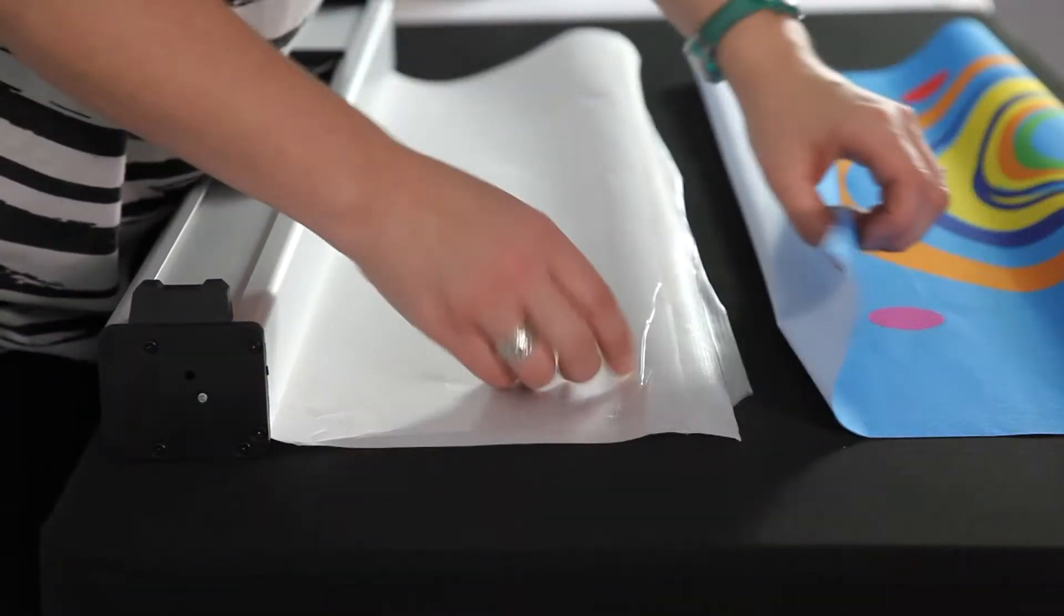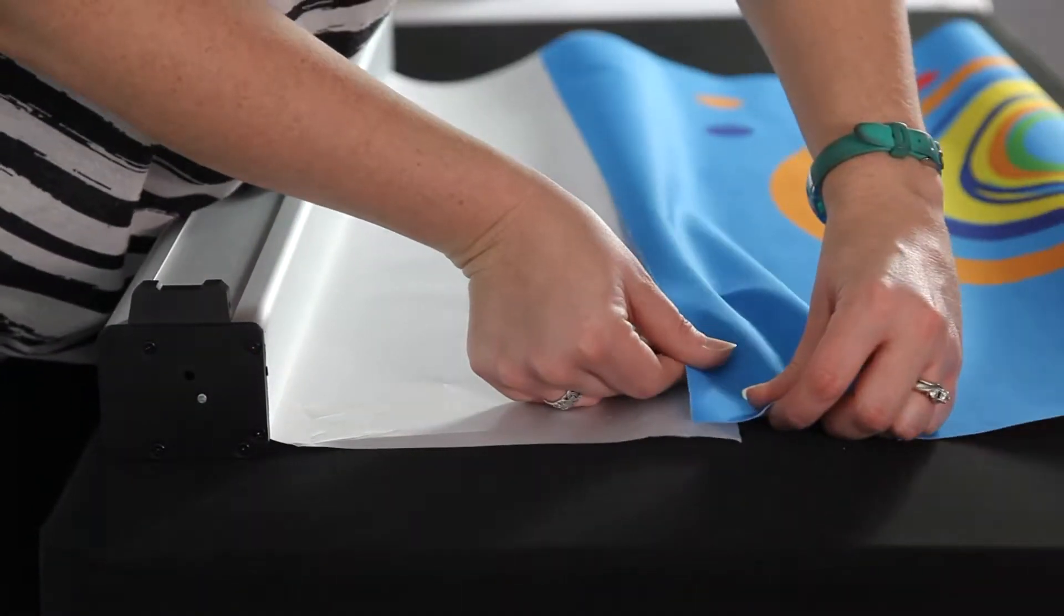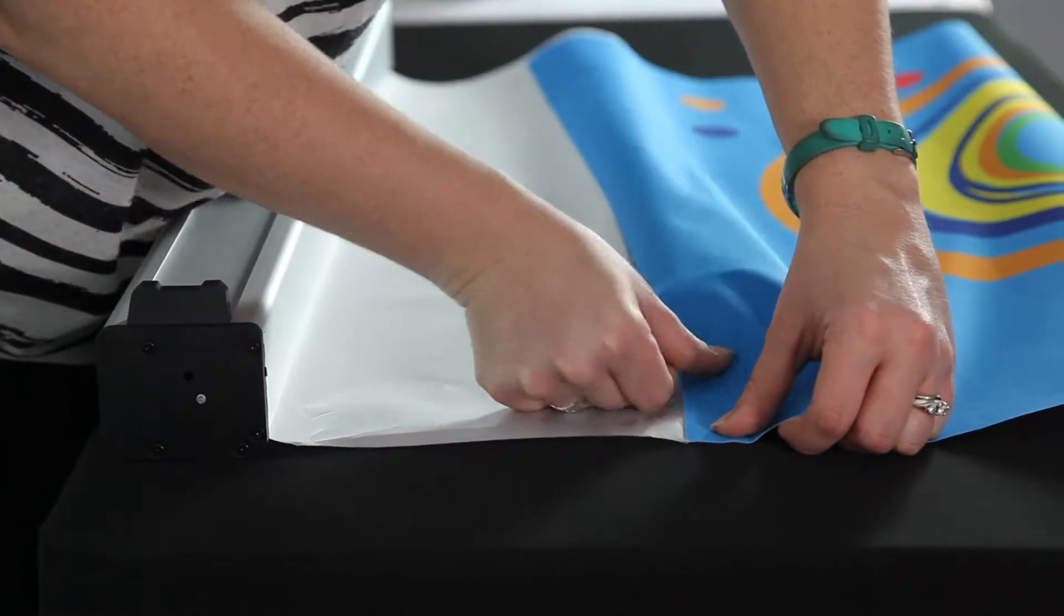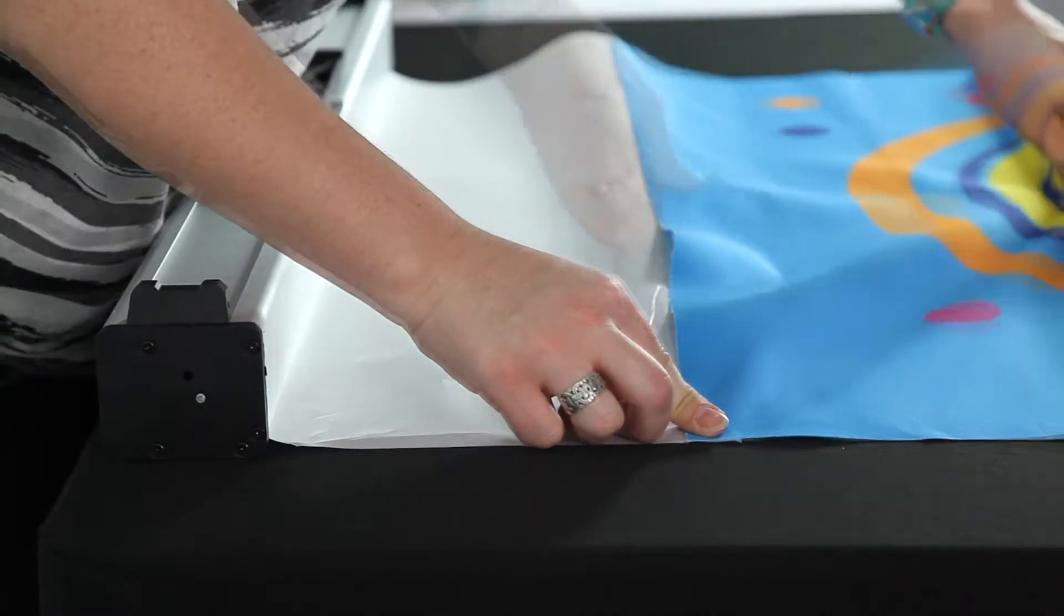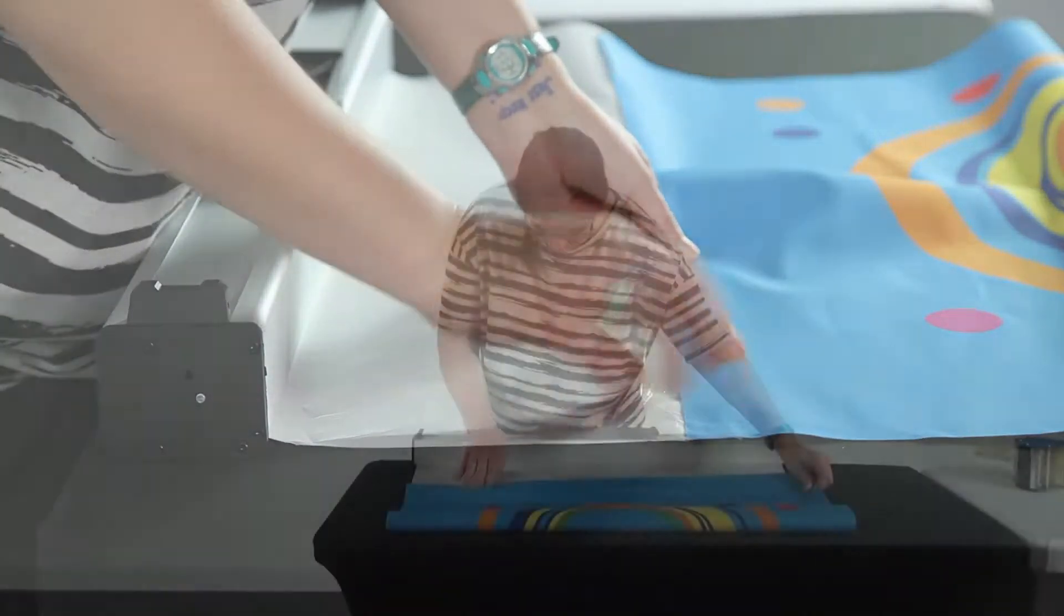With the base upside down, align the bottom of your banner to the top of the plastic material. You want to come in about an inch and start pushing the banner down onto the plastic material.